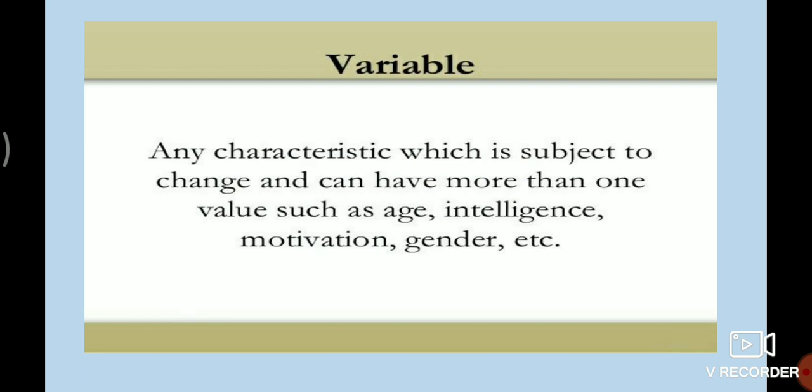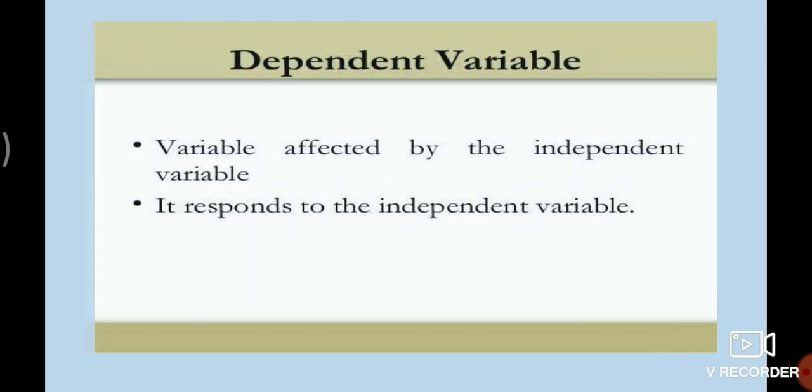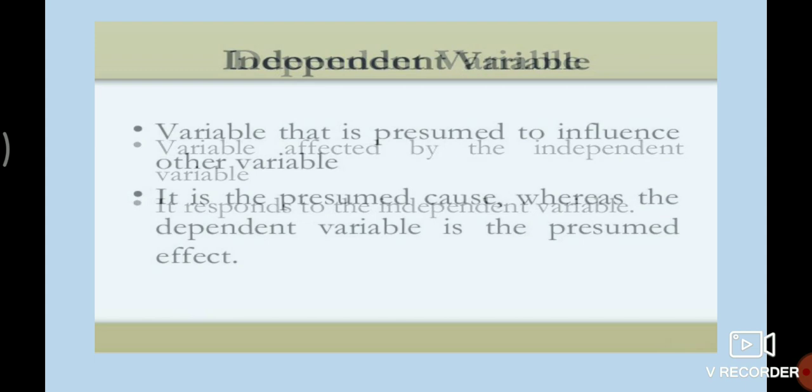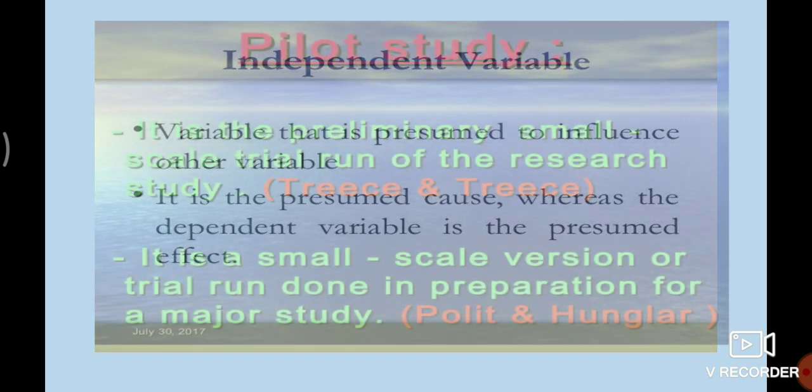The variable. Any characteristic which is subject to change and can have more than one value, such as age, intelligence, motivation, gender, etc. This is the definition of variable. Variables can be divided into two: dependent variable and independent variable. Dependent variable is a variable affected by the independent variable. It responds to independent variable. Independent variable means a variable that is presumed to influence other variables.